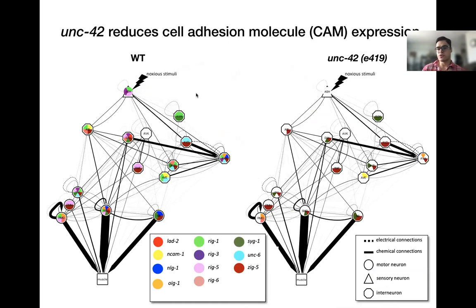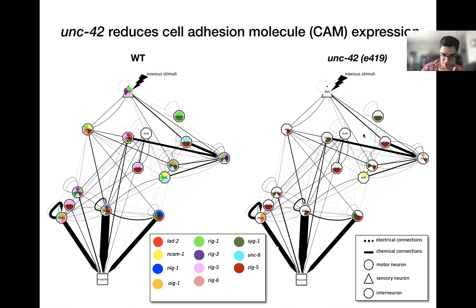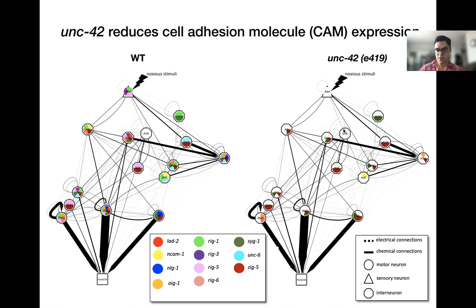Additionally, ONG-42 mutations are shown to reduce the expression of several downstream genes, including those responsible for cell adhesion. On the left-hand side we see the ONG-42 sub-network with colors indicating the expression of 11 cell adhesion molecules on each neuron. On the right-hand side we see the cell adhesion molecule expression in the mutants, and most of these molecules have stopped expressing. This finding highly suggests that these particular cell adhesion molecules play an important role in synaptic organization.